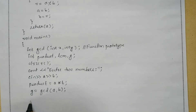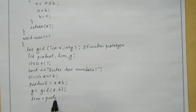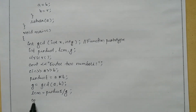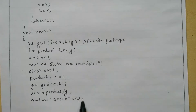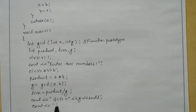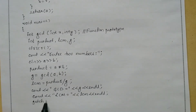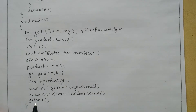Next, I want to find the LCM. I use the variable lcm equals product divided by g — this gives us the LCM. I write a cout statement: GCD is equal to g, followed by endl. Then I write another cout statement: LCM is equal to lcm, followed by endl. Finally, I write the getch function and the curly closing brace for the main function.